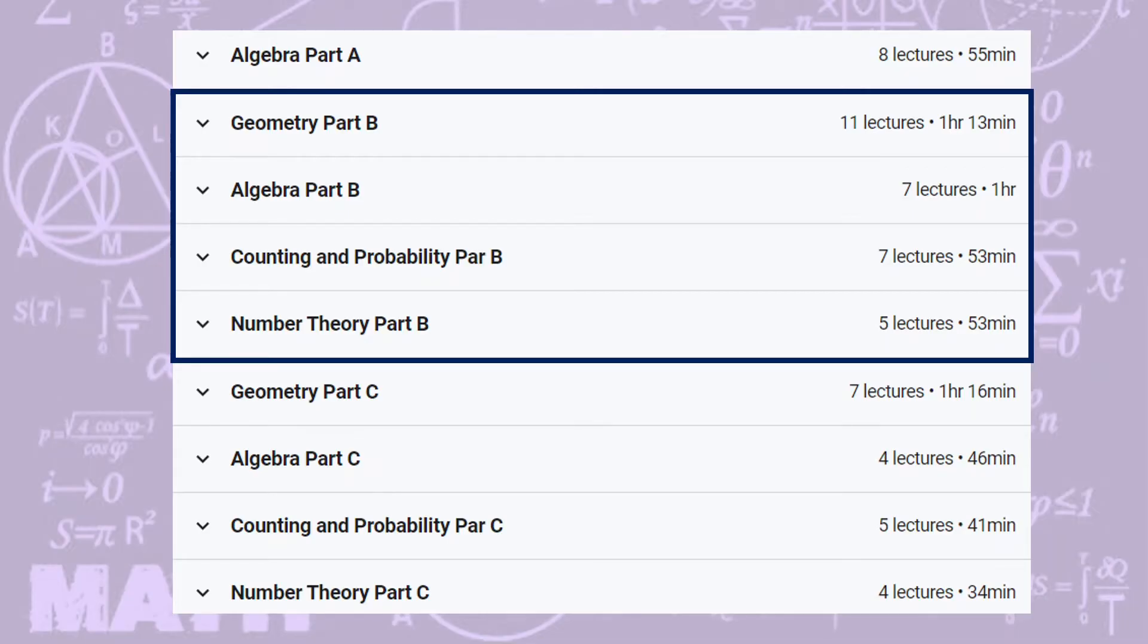Part B typically are questions 11 to 20 in an AMC 10 paper. These questions are the core of an AMC paper. If you are aiming to qualify for the next round, AIME, you should spend most of your learning time on part B.